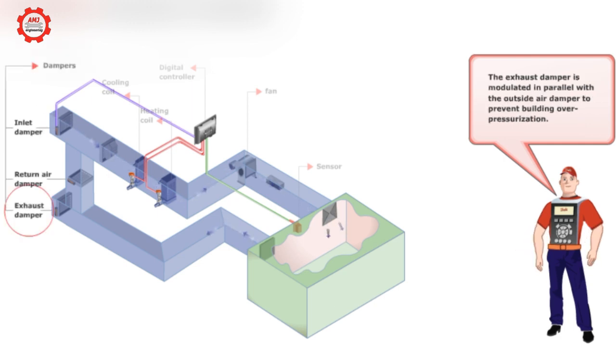The exhaust damper is modulated in parallel with the outside air damper to prevent building over pressurization.